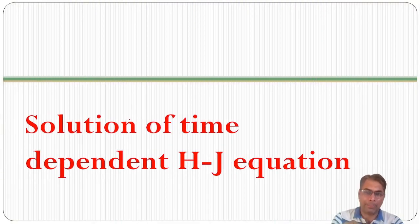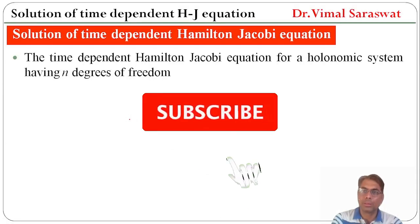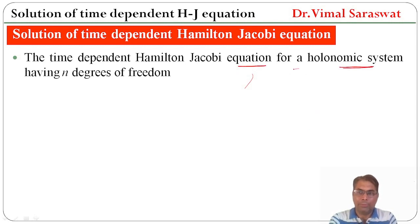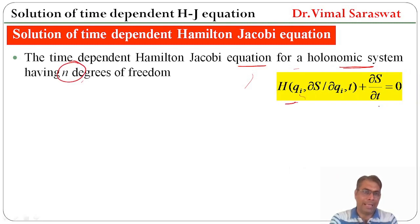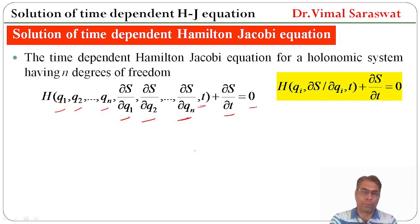The time-dependent Hamilton-Jacobi equation for a holonomic system with n degrees of freedom is H plus del S by del t equals to 0. Here H is a function of q_i, del S by del q_i, and time. Or H is a function of q1, q2, ..., qn, del S by del q1, del S by del q2, ..., del S by del qn, and time, plus del S by del t equals to 0.